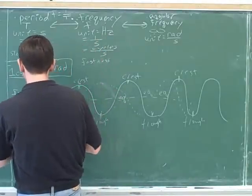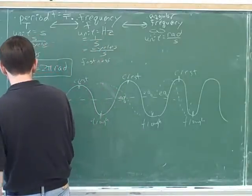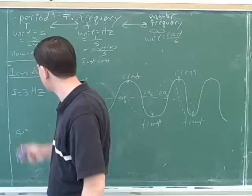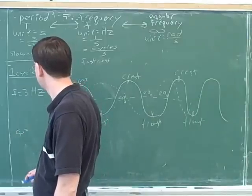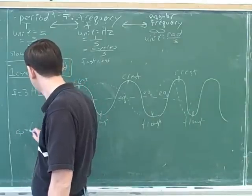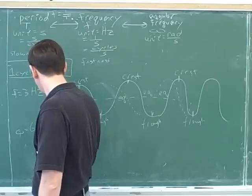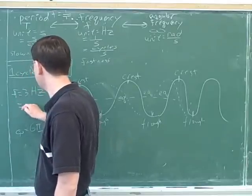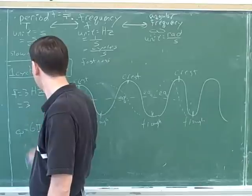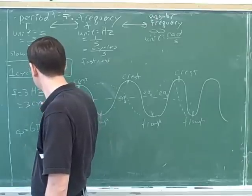Or, let's say that the frequency was three hertz. How do we interpret that? Six pi radians. Yeah, six pi radians in one second. Good. How do we interpret the three hertz? Three cycles every one second.